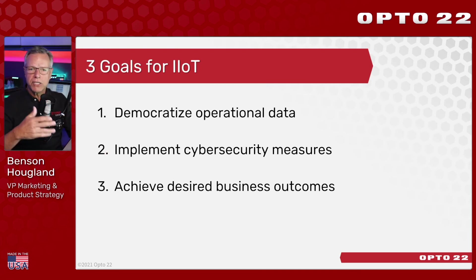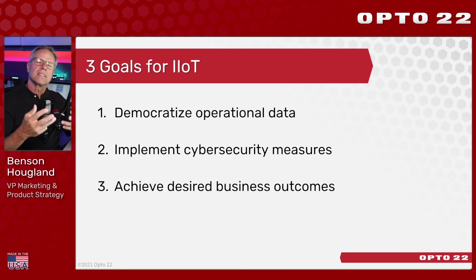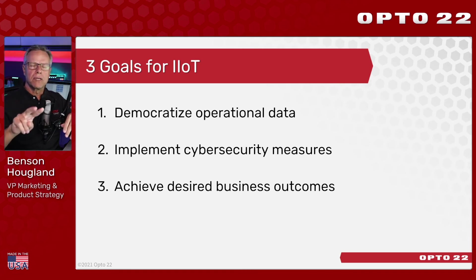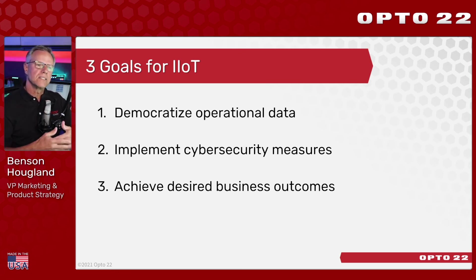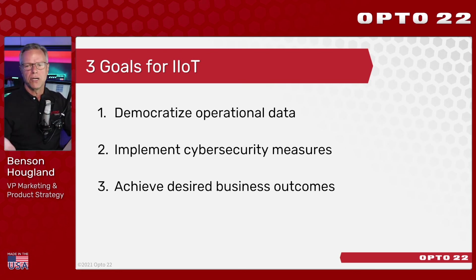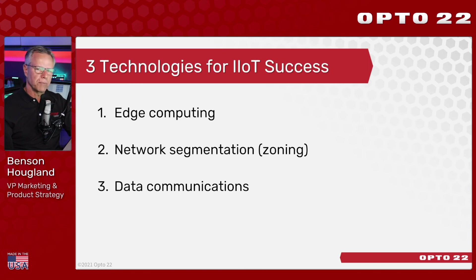Three goals for the IIoT: when you're trying to apply digital transformation or an IIoT project, you can distill it down to three primary goals. The first is democratizing operational data — making data available and accessible to any applications that can use it. The second is implementing cybersecurity measures, because we don't want to allow anybody to get data from unsecure devices — only those who are authenticated and encrypted. The third, of course, is achieving the desired business outcome.